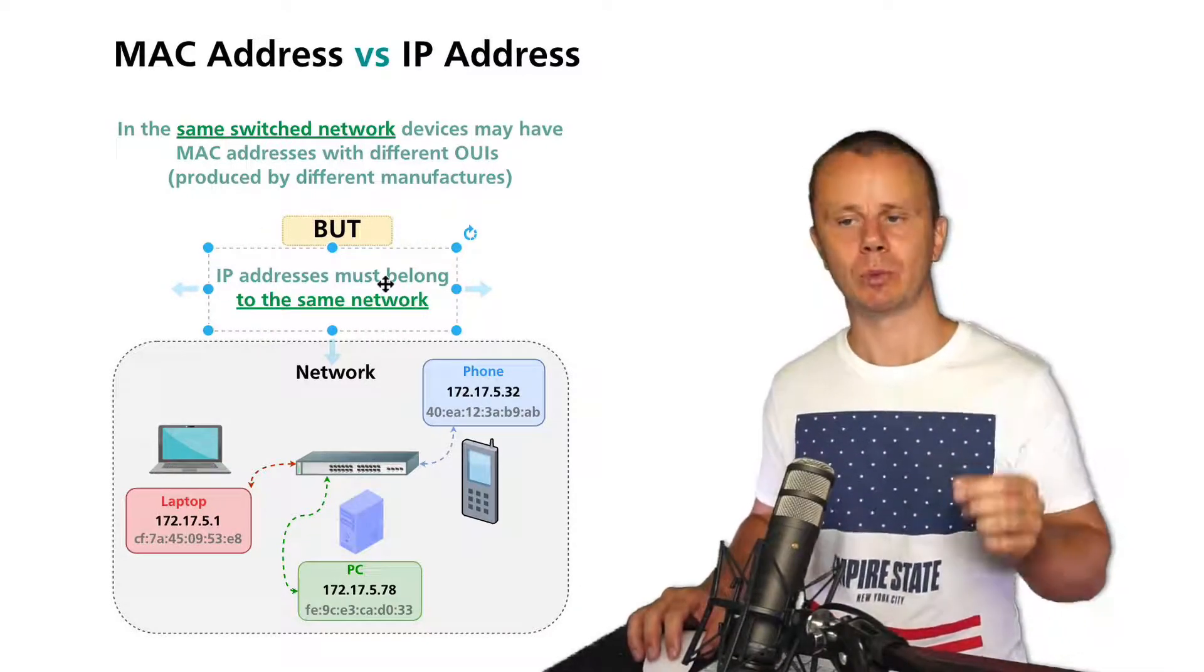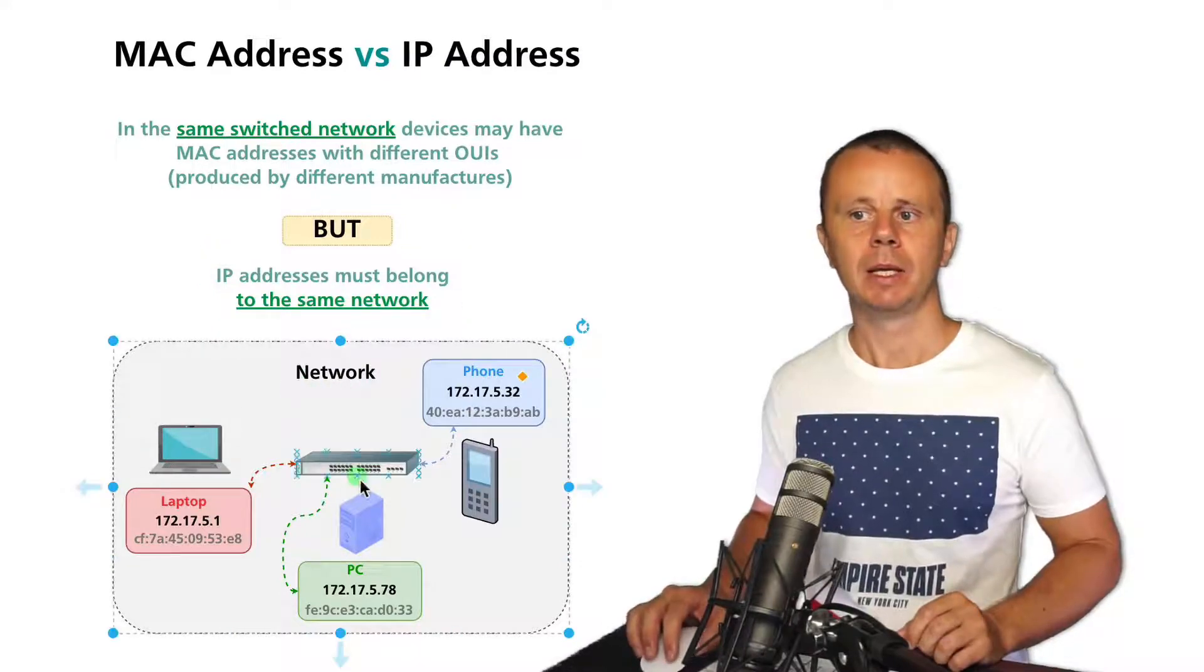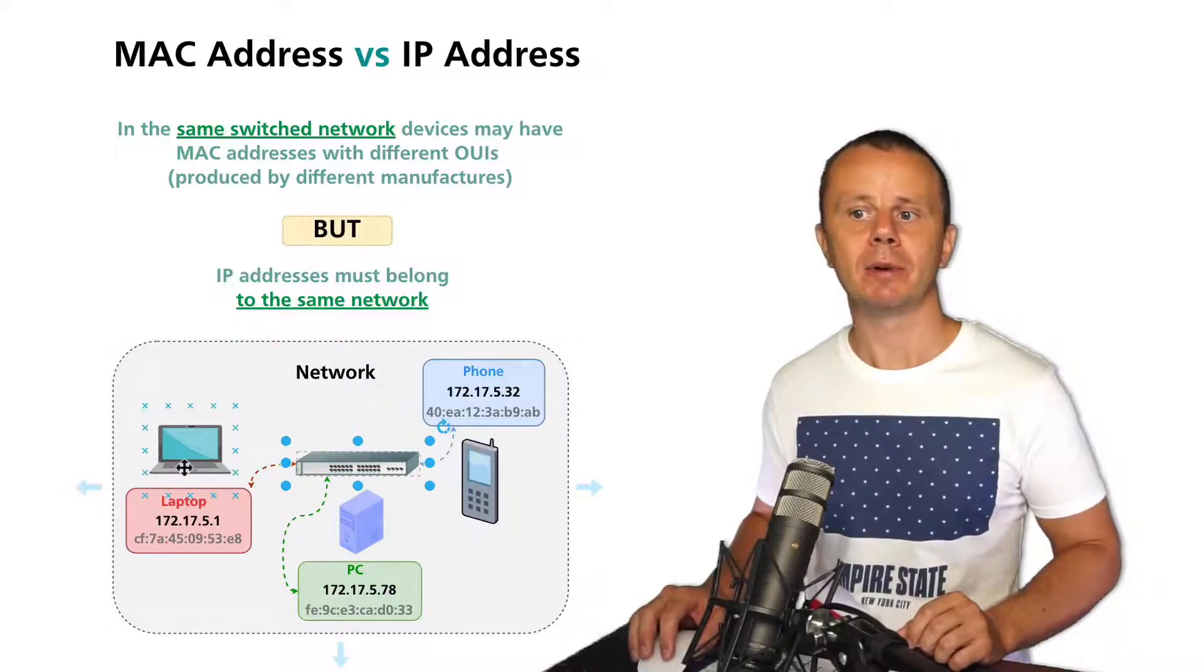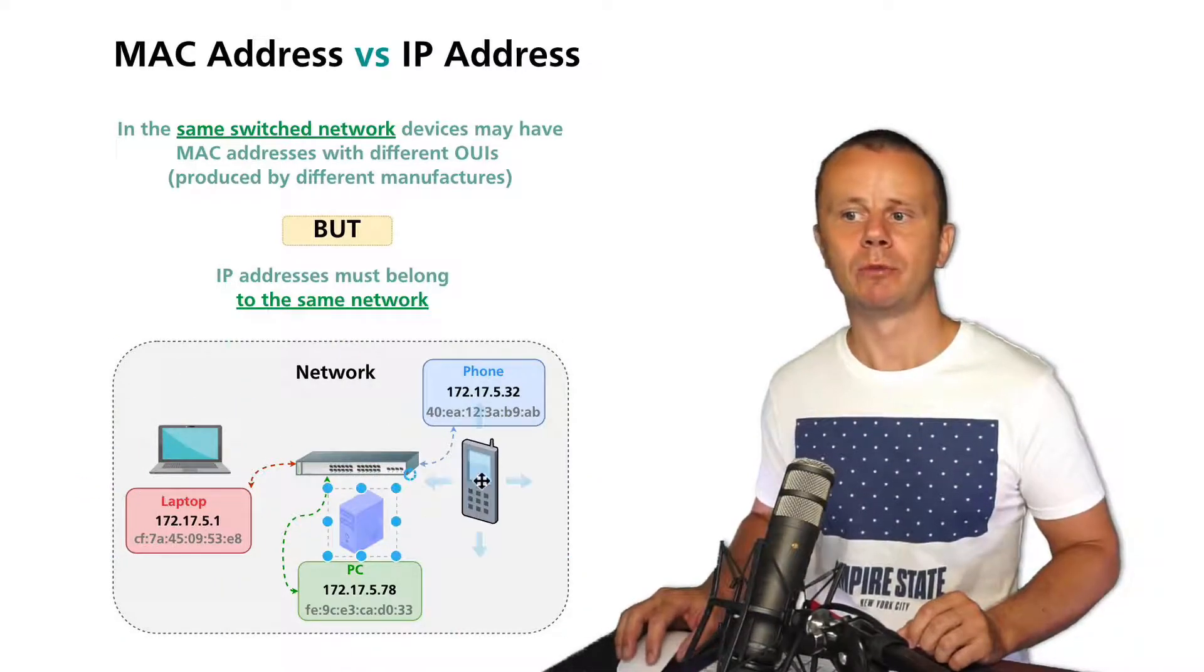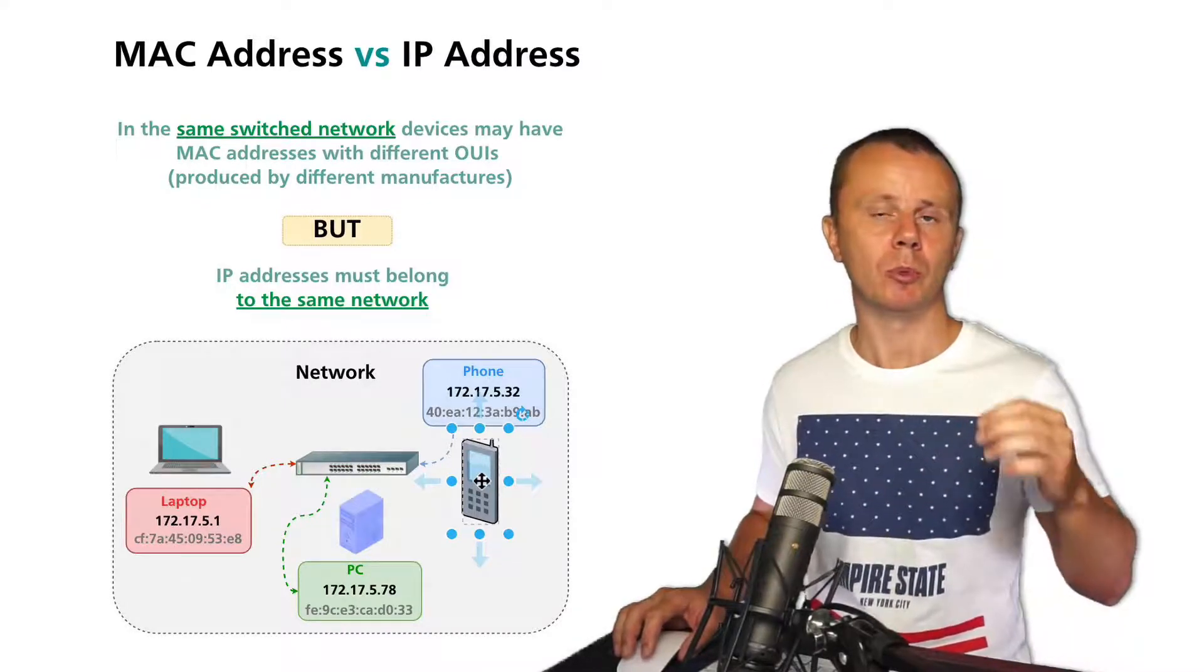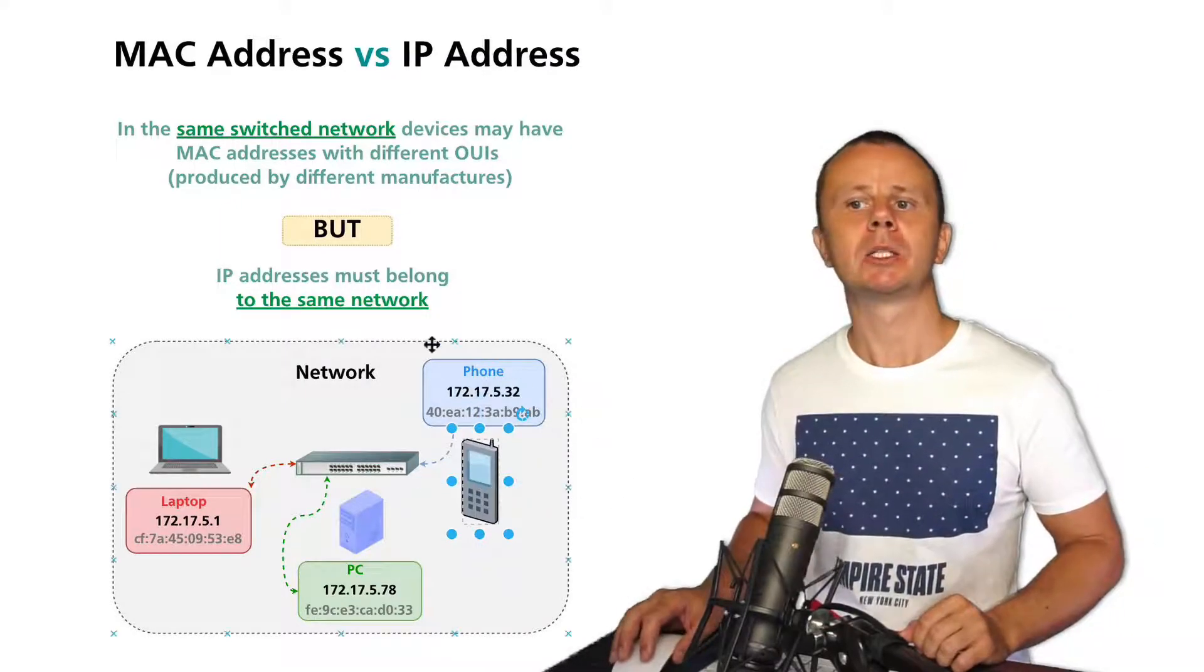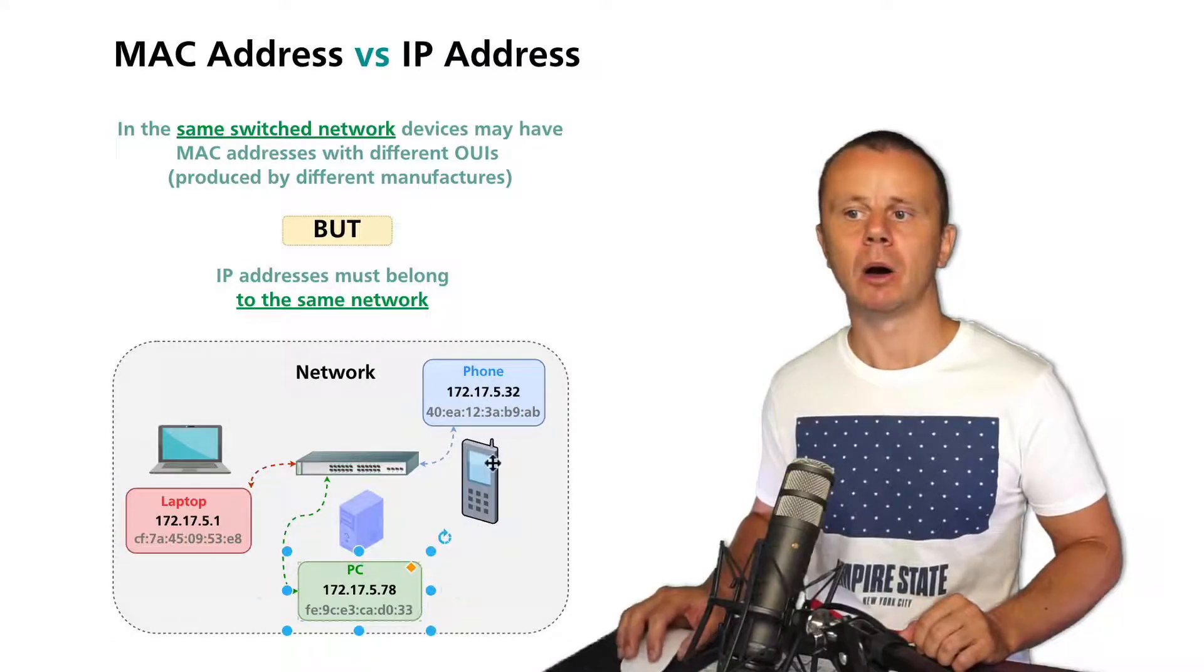Here you see an example of that. Here you see a switch - it is a switched network - and here you see several devices like laptop, server, and mobile phone that is connected for example via wireless access point that also operates on data link layer. We will get back to it a bit later, but it is a switched network. Notice different MAC addresses on all devices.